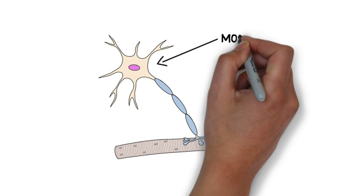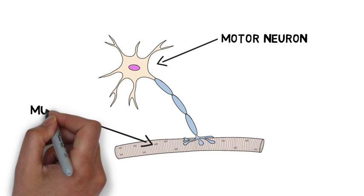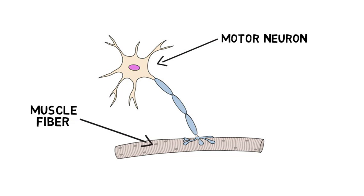The term neuromuscular junction refers to the synapse between a motor neuron and a skeletal muscle fiber. Activity at the neuromuscular junction is essential for the contraction of skeletal muscle to occur, and even just to keep muscles from atrophying.